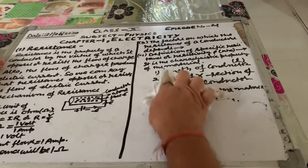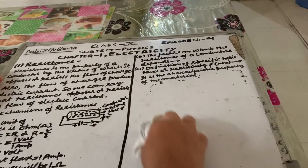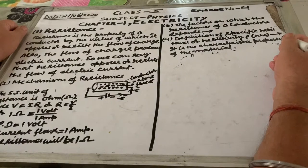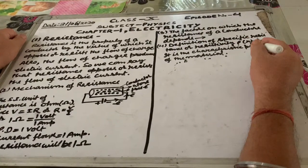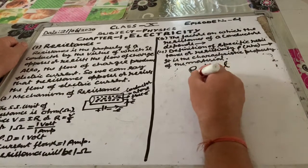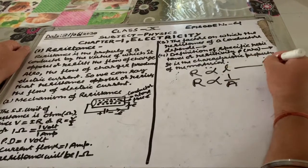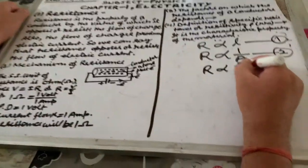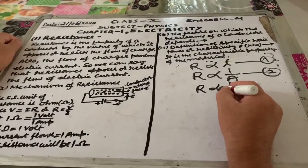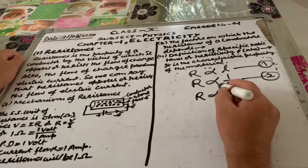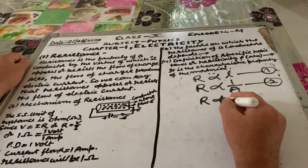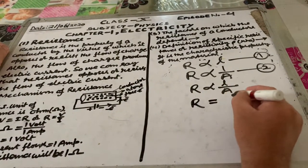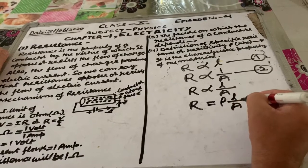Now coming to the definition of specific resistance or resistivity, denoted by rho. We know that R is directly proportional to L (equation 1) and R is proportional to 1 upon A (equation 2). On combining these two equations, R is proportional to L upon A. Removing the sign of proportionality, we introduce a constant, giving us R is equal to rho L upon A, where rho is known as the specific resistance or resistivity.